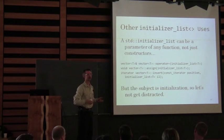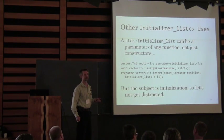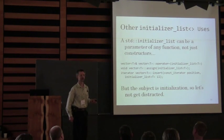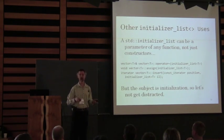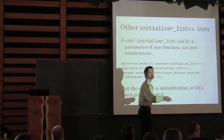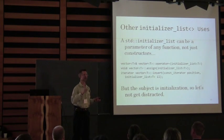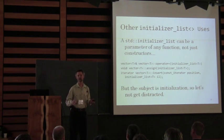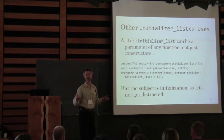One limitation with initializer lists is that the size member function of an initializer list is not constexpr, so you can't operate on that at compile time. Even though the compiler actually knows that value at compile time, it isn't constexpr. This is something that someone in the standard committee may want to change — it seems like it would be a non-breaking change.